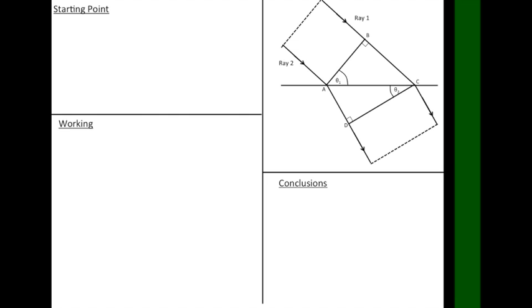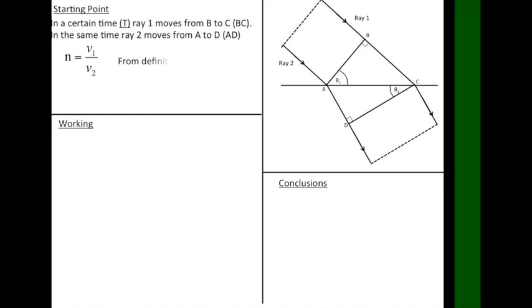In this case, we're going to start with the observation that, in a certain amount of time, capital T, ray 1 moves from B to C, and ray 2 moves from A to D. We're also going to use the definition of refractive index, and the definition of speed.